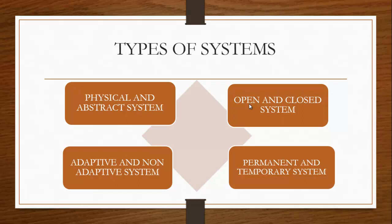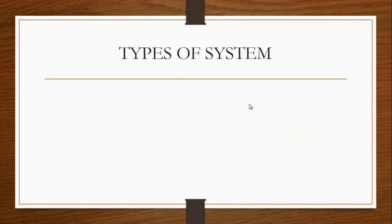Another classification is permanent and temporal systems, which is based on time. A permanent system is one that persists for a long time — for instance, organizational business policies set at the highest level of administration. A temporal system is made for a specific time, after which it may go into extinction; it is designed to respond to immediate issues. In other words, the permanent system is a long-run system while the temporal system is a short-run system.